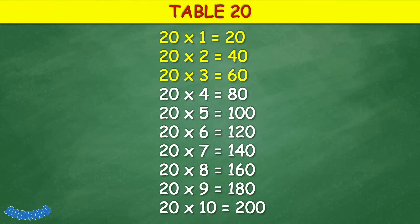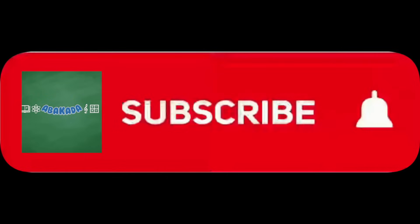Table 20: 20 times 1 equals 20, 20 times 2 equals 40, 20 times 3 equals 60, 20 times 4 equals 80, 20 times 5 equals 100, 20 times 6 equals 120, 20 times 7 equals 140, 20 times 8 equals 160, 20 times 9 equals 180, 20 times 10 equals 200. Thank you for watching.